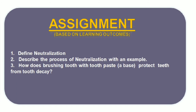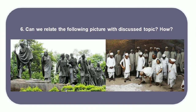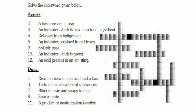I hope you understood everything clearly. Based on this class, you have to complete the assignment covering the learning outcomes: first, define neutralization and describe the process giving an example; next, identify the type of salt; and then correlate a given picture with the discussed topic. There is also a puzzle for you. Post any doubts in the WhatsApp group so I can reply. We will meet in the next session with a new topic. Have a great learning time. Jai Hind.